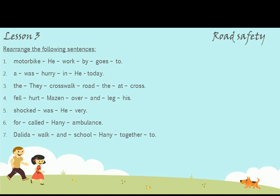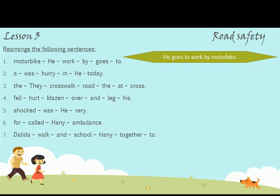Number 1. Words: motorbike, he, work, by, goes, to. The first word is 'He' because it is the subject and starts with a capital letter. The answer is: He goes to work by motorbike. This is a motorbike.